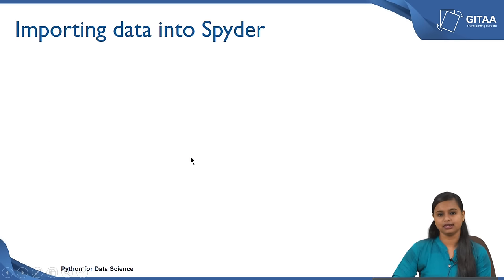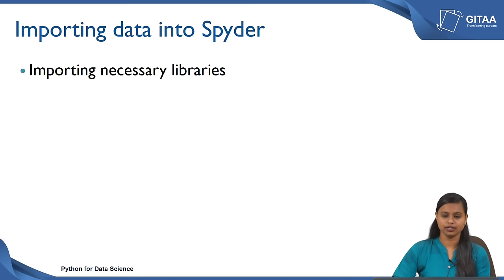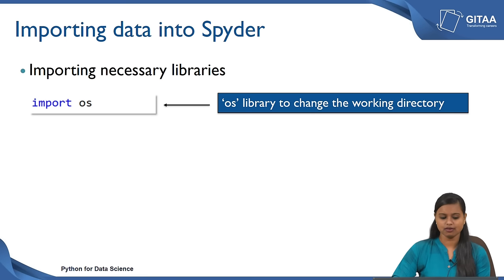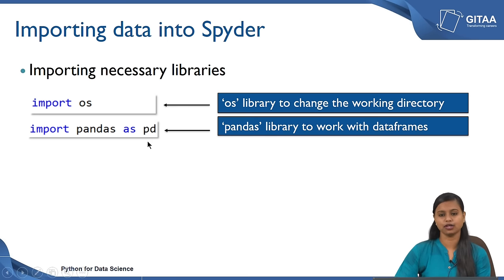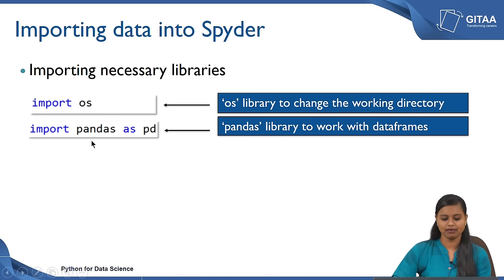Before exploring on the data we need to import the data into Spyder to work on that. Prior to importing data we need to import the necessary libraries that are required. First, we are importing the OS library — we use the OS library to change the working directory. Next, we will also be working with data frames because once we read any data into Spyder that becomes a data frame. To deal with data frames we need to load the library called pandas, and we have imported it as pd.